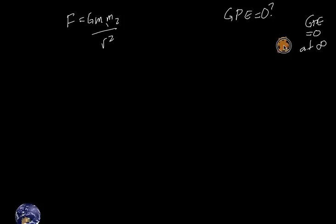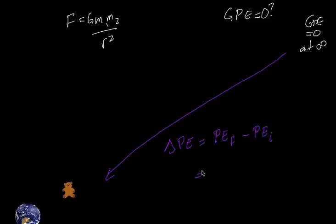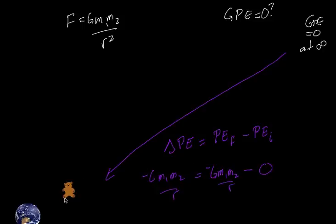If I take Teddy and apply work to move him from infinity to a closer distance, the change in gravitational potential energy equals the final potential energy minus the initial potential energy. If we set the initial — at infinity — equal to zero, then the change we already established was −Gm₁m₂/r, and so the actual value of Teddy's gravitational potential energy equals −Gm₁m₂/r. That is the definition: the work done moving Teddy from infinity to a point above the earth.